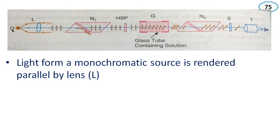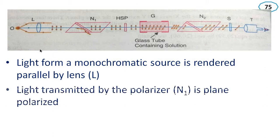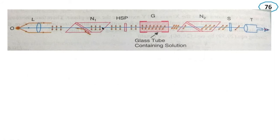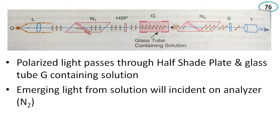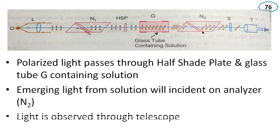There is a light source. The light from a monochromatic source is rendered parallel by the lens L. It will be polarized light after passing through the Nicol prism N1. The emerging light from the solution will be incident on the analyzer N2. The light can be observed through the telescope having an eyepiece.